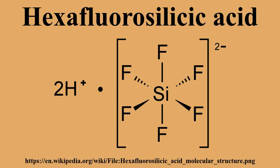The Si-F bond distance is 1.71 Å. Hexafluorosilicic acid is only available commercially as a solution. The commodity chemical hydrogen fluoride is produced from fluorospar by treatment with sulfuric acid. As a byproduct, approximately 50 kg of SiF4 is produced per tonne of HF, due to reactions involving silica-containing mineral impurities.